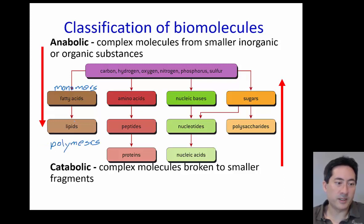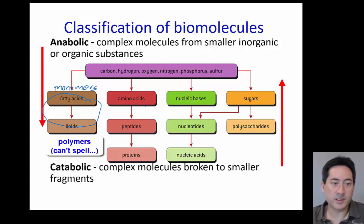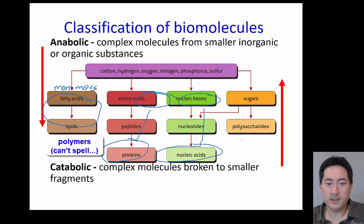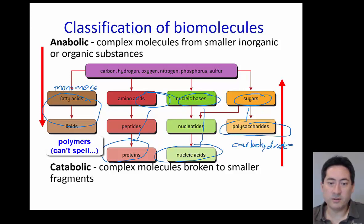Fatty acids make up lipids — you've just got to memorise that. Amino acids make the proteins, nucleic acids make up RNA and DNA, and different types of sugars make up different types of carbohydrates. If you've done biology, you'll be quite familiar with that.